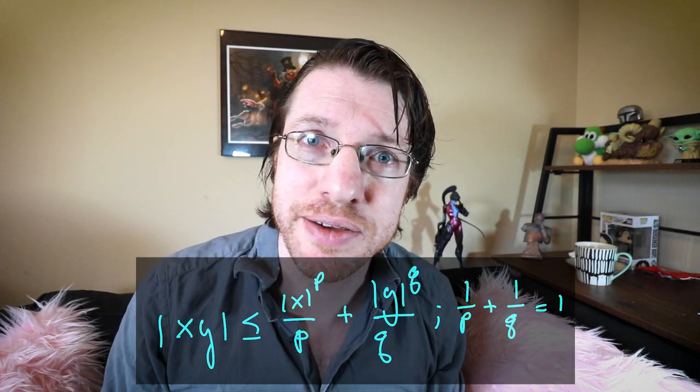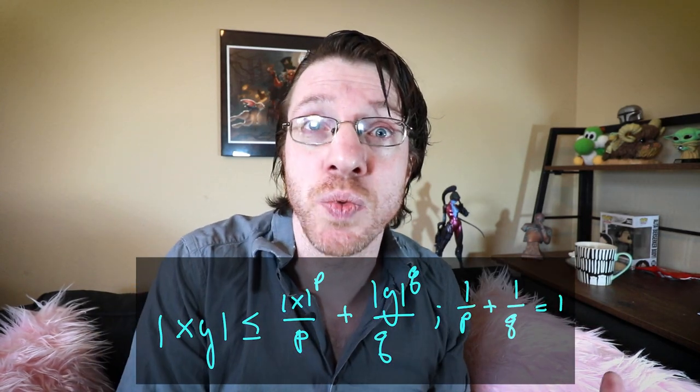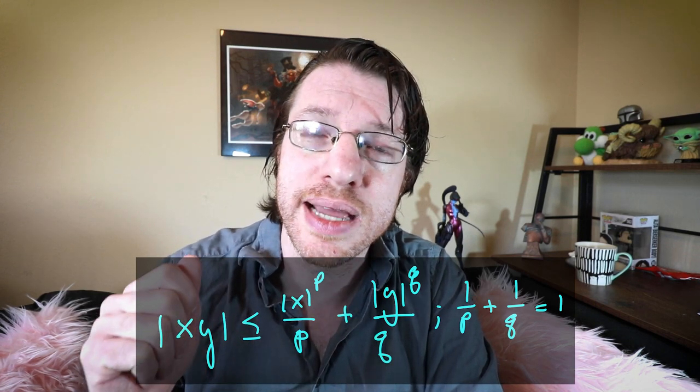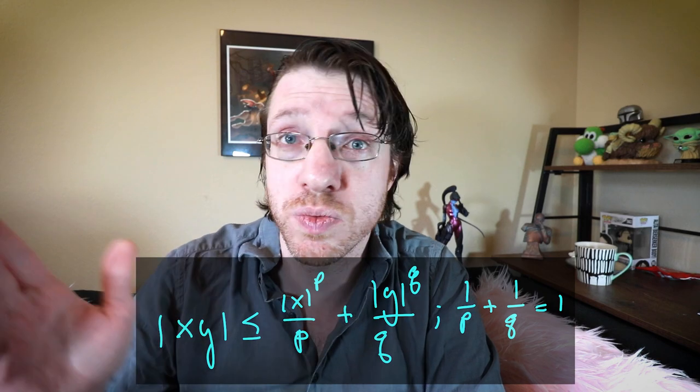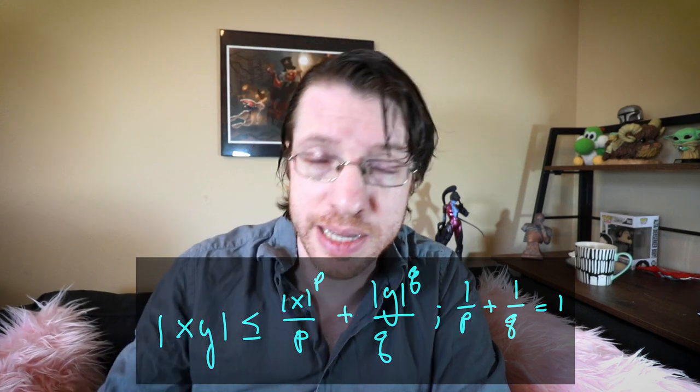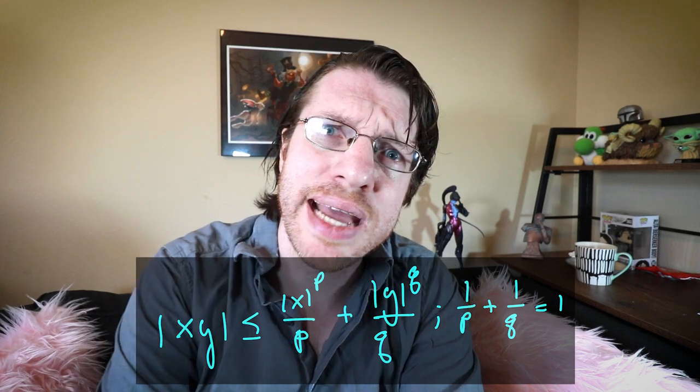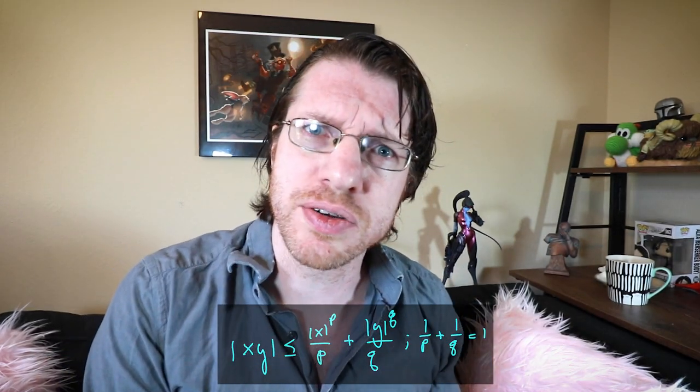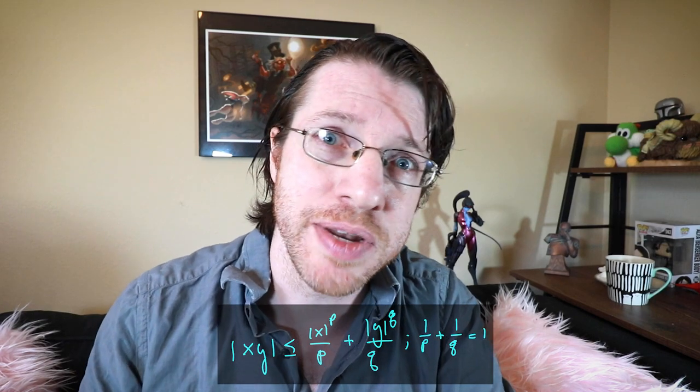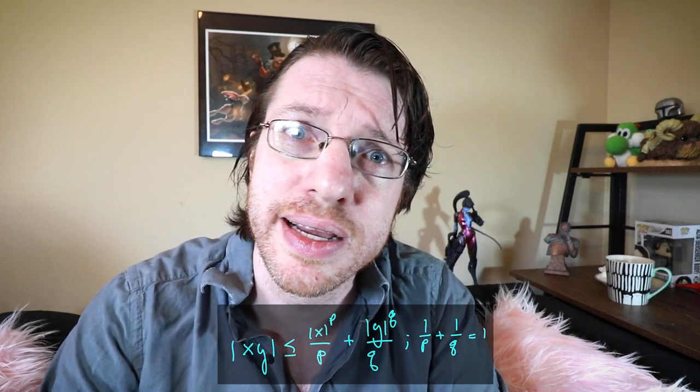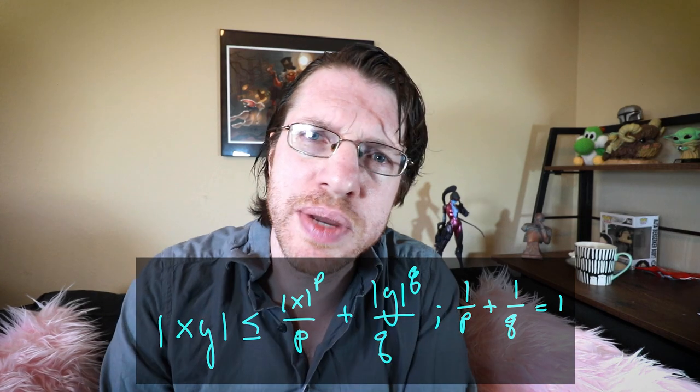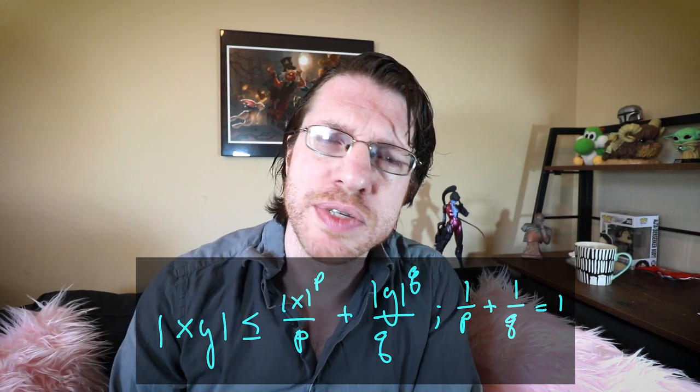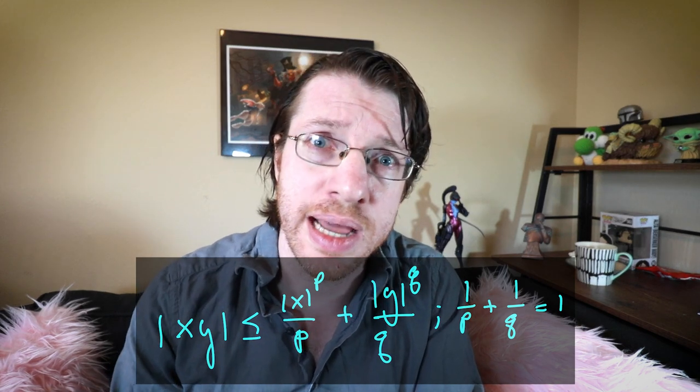But Young's inequality is a little bit different. So you start with a product on the left, and so, say, X times Y. You take X times Y and you bound that with X to the P over P plus Y to the Q over Q, where P and Q add to the same relation we had for the Holder inequality. And in this sense, it's interesting because you're exchanging a product for a sum, and that sum doesn't have to necessarily be quadratic like what you had on the other side. And so the inequalities that you get out of Young's inequality end up being a little bit different in character than, say, Cauchy-Schwartz or Holder's in that way.